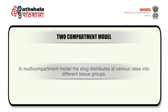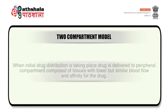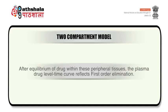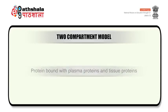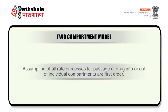In multi-compartment models, the drug distributes at various rates into different tissue groups. During initial drug administration, drug is delivered to the peripheral compartment by a drug distribution process comprising tissues with lower but similar blood flow and affinity for the drug. After equilibrium of drug within these peripheral tissues, the plasma drug level-time curve reflects a first order elimination process. Drug concentrates in tissues in accordance with affinity; lipid soluble drugs accumulate in fat tissues, and protein bound drugs bind with plasma protein, tissue protein, and other macromolecules like DNA and melanin. All rate processes for passage of drug into or out of individual compartments are assumed to be first order.